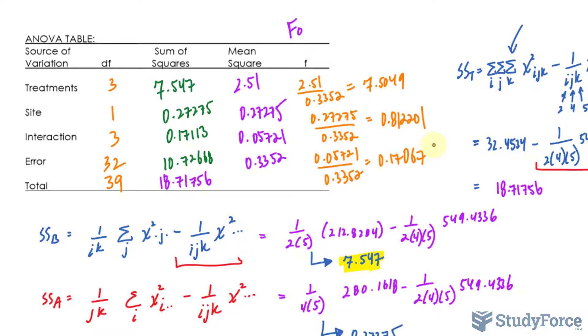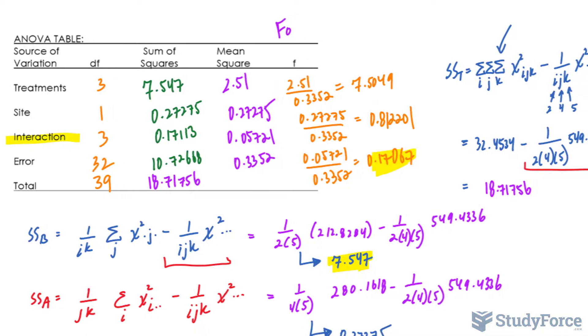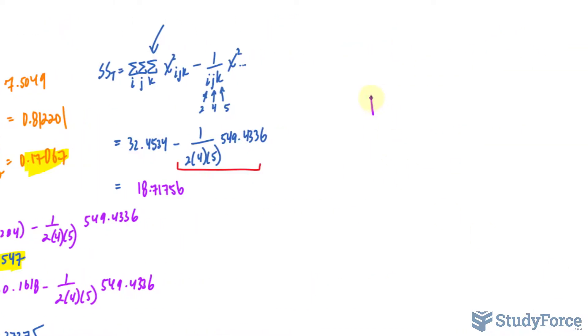So our first hypothesis was for the interaction. This value right here is the most important value right now. We need to compare this to the F critical, and the F critical can be located on a table. We'll call it FC, and it's based on the alpha value of 0.05, DF1, and DF2, where DF1 is that associated with the interaction, which was 3, and this is error. That was 3, and that is 32.